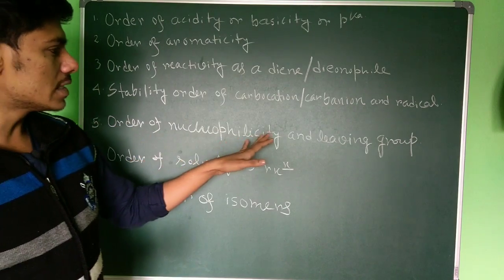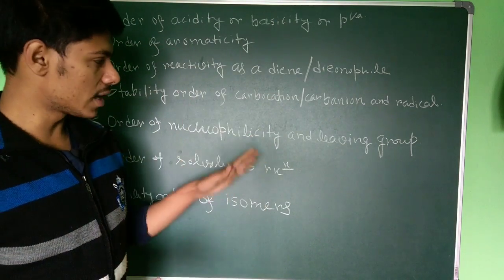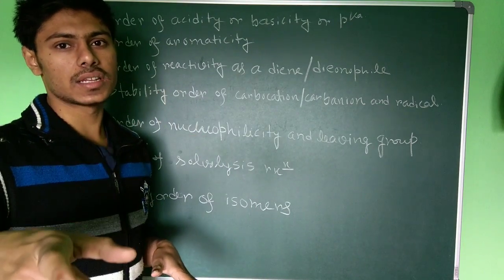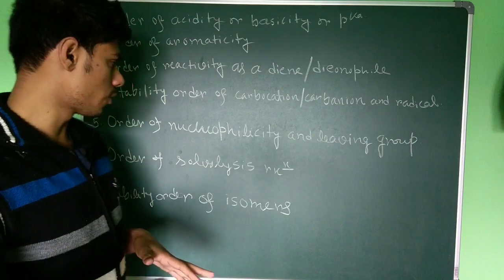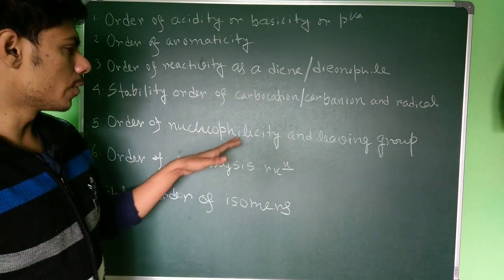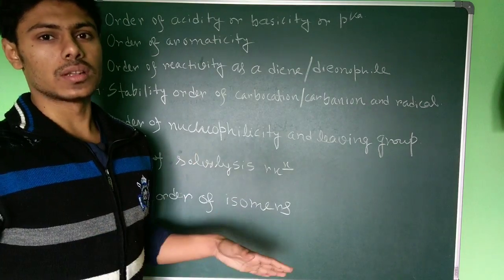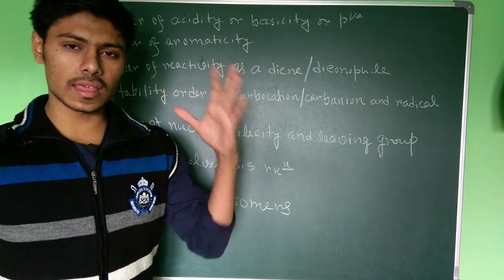The fifth one is the order of nucleophilicity and leaving group ability. Again, it is very important and you can get it from Peter Sykes and Carey Sundberg. These two books are very good. Order of nucleophilicity and leaving group ability, not only in terms of questions but as a chemist, you should always know it.